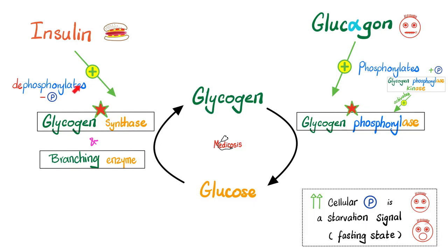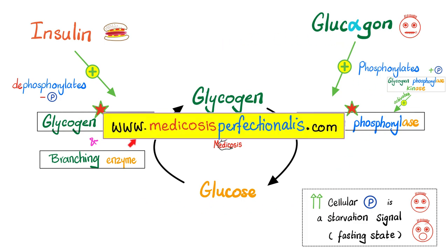Insulin helps glycogen synthase by dephosphorylating it — removing a phosphate. Glucagon helps glycogen phosphorylase by phosphorylation — adding a phosphate. Glycogen phosphorylase kinase is the enzyme that adds a phosphate to glycogen phosphorylase to activate it. If I see tons of phosphate in a cell, it means the organism is starving. Accumulation of cellular phosphate is a starvation signal signifying prolonged fasting.